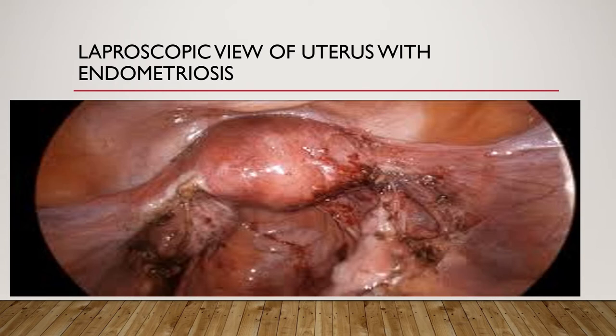Look at this photo. This is also a laparoscopic view of the pelvis, but here the tissue looks unhealthy. There are multiple bleeding points and multiple scarring — burn-like tissue, like cigarette burns. This is endometriotic tissue with filamentous adhesions. Bilaterally, we can see what looks like a spider web. This endometrial tissue lies outside the endometrial cavity and, as we can see in this picture, it bleeds.